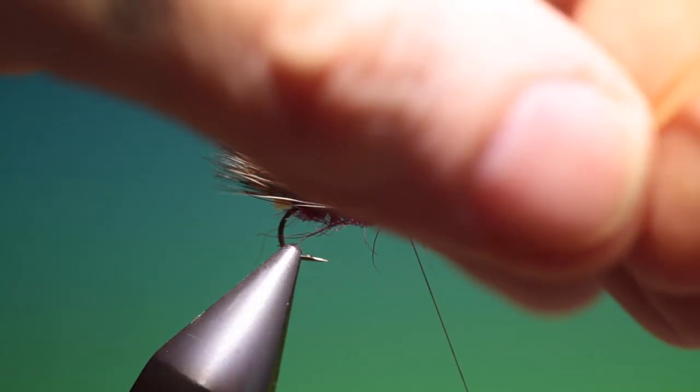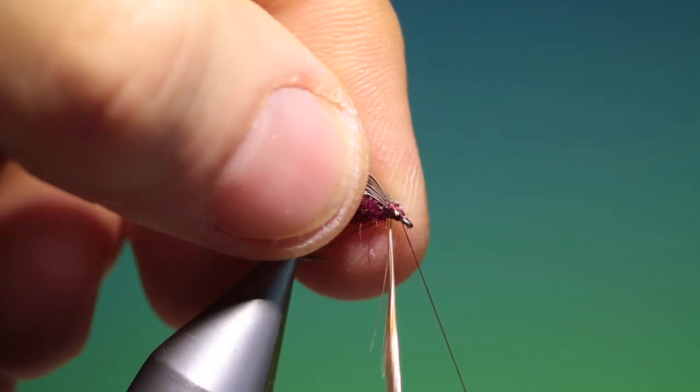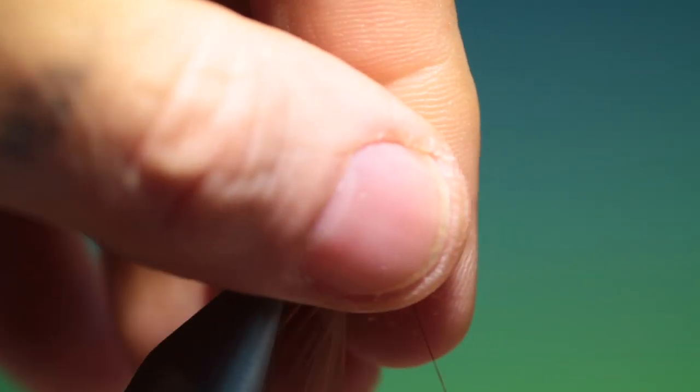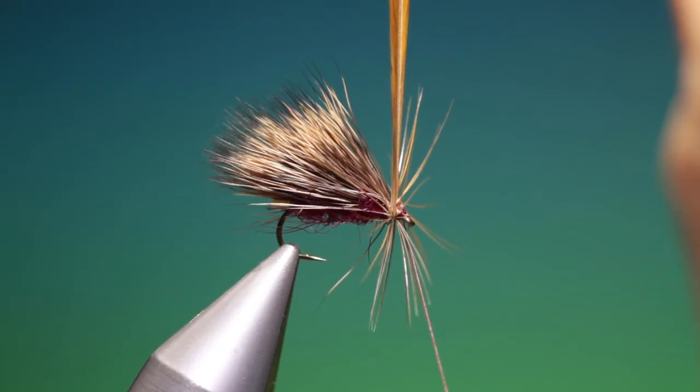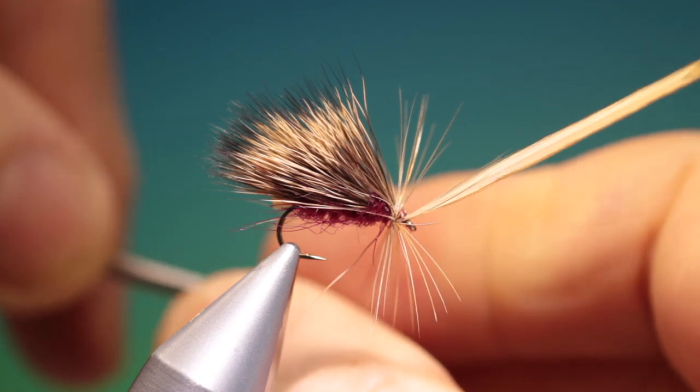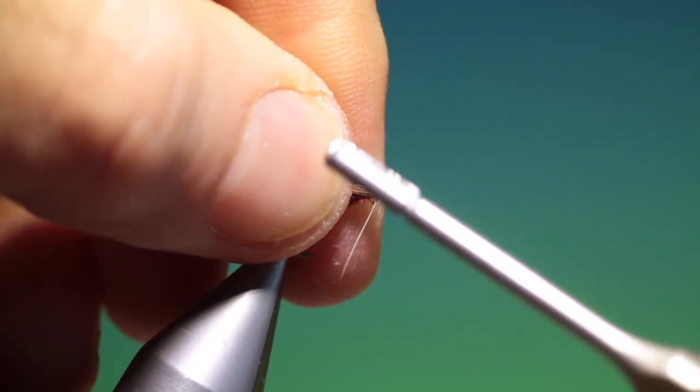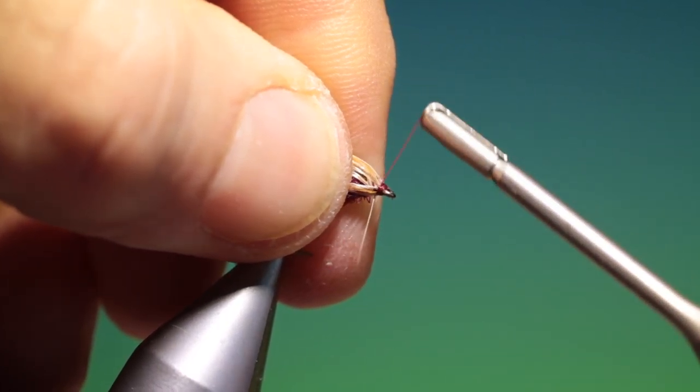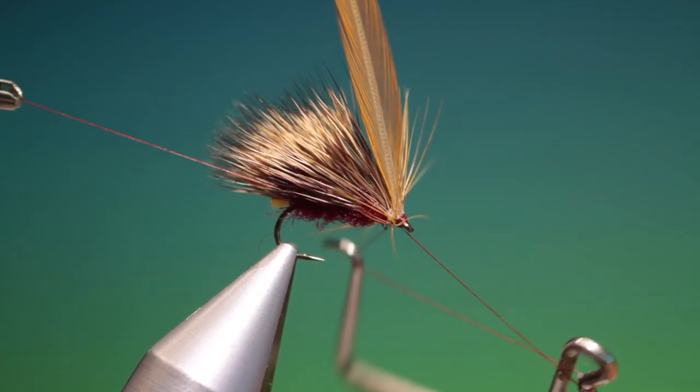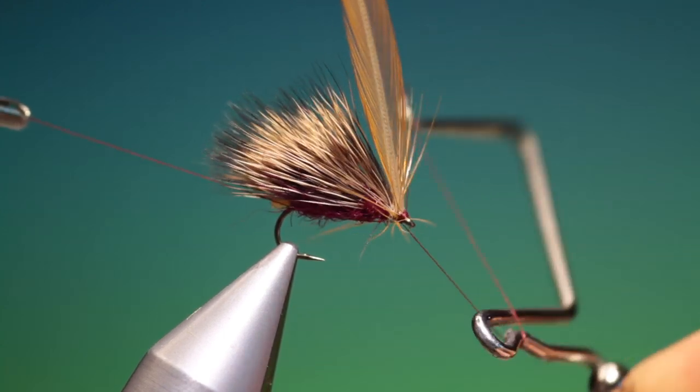Take a hackle plier. Pop that on. We only need a couple of turns here. There we are. That'll do. Take that in. Then pull everything back. Form a little head and secure it with a couple of whip finishes.